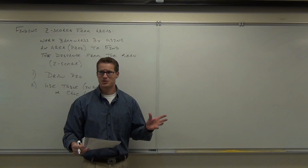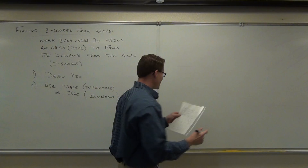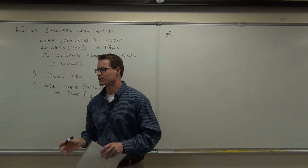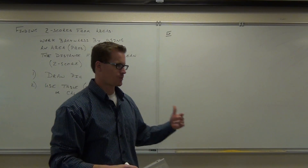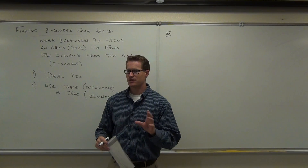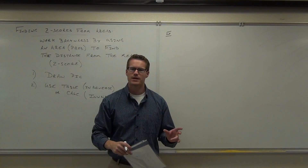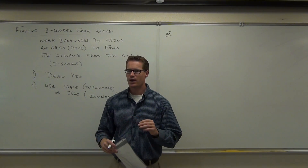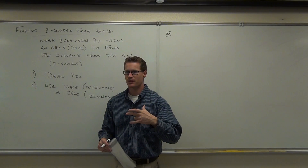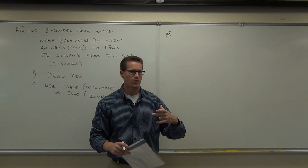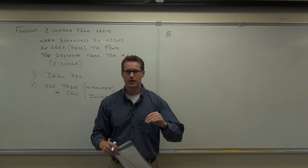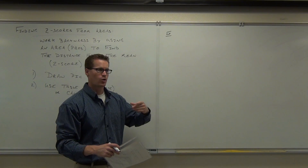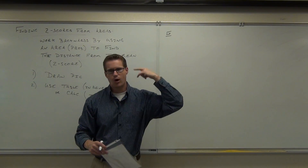Are you ready to do an example? Here's how your examples for this type of problem are going to look. We're going to use the thermometer example again — mean of zero and a standard deviation of one. Our distribution is always standard normal. A z-score will translate a normal distribution to a standard normal. That's what we're doing, so in our example for the thermometers.